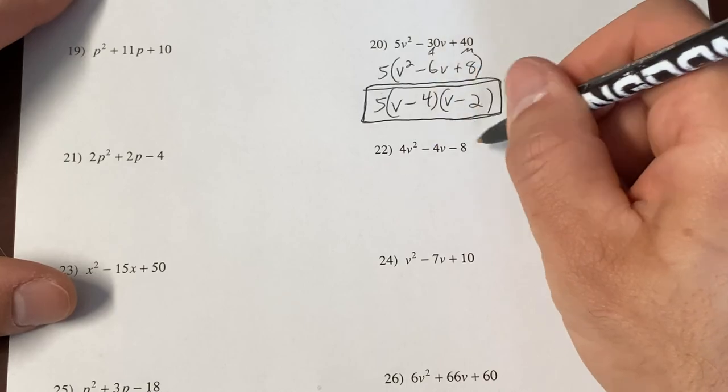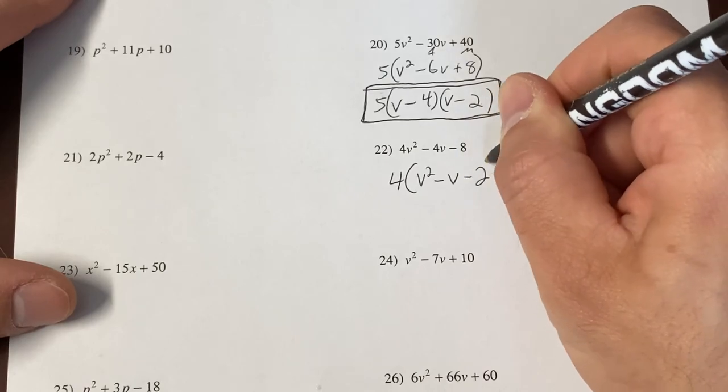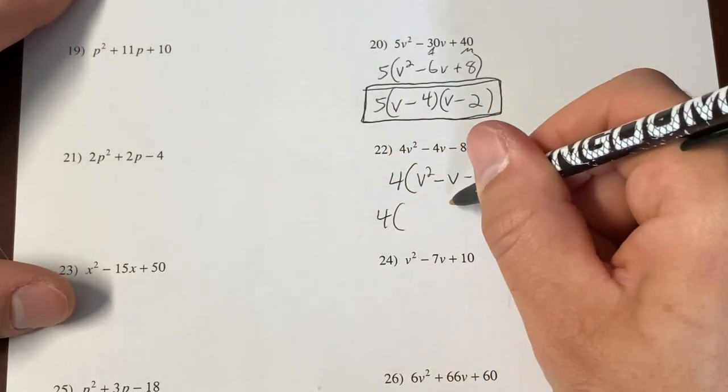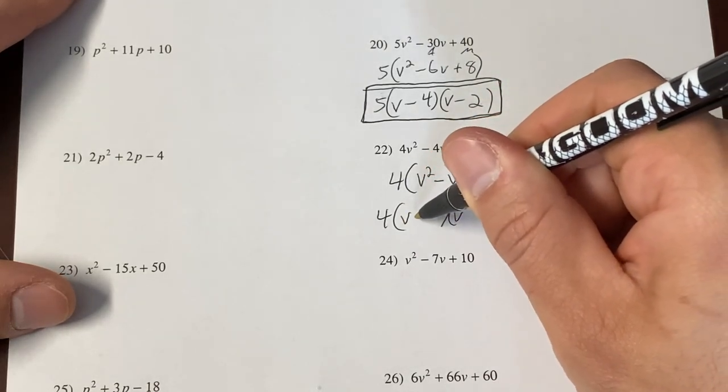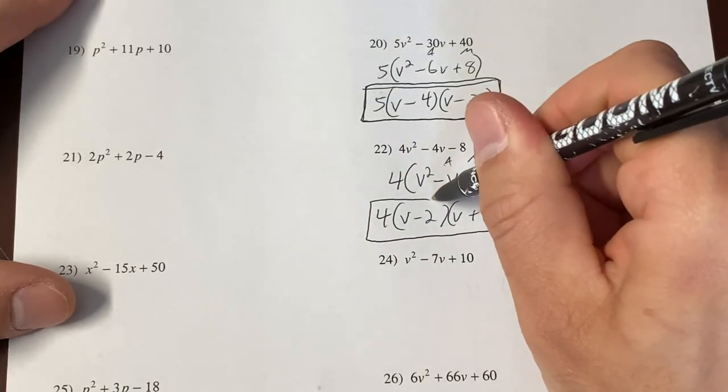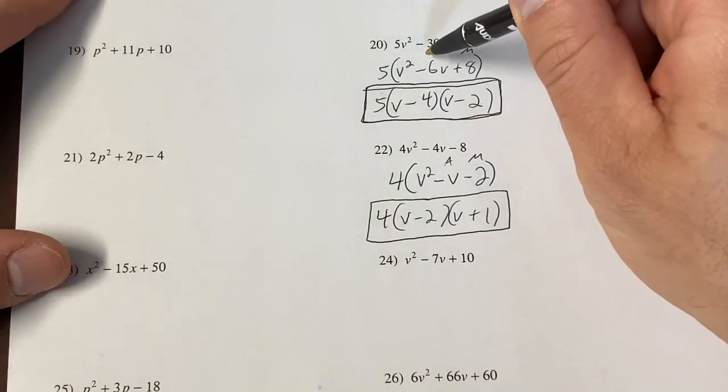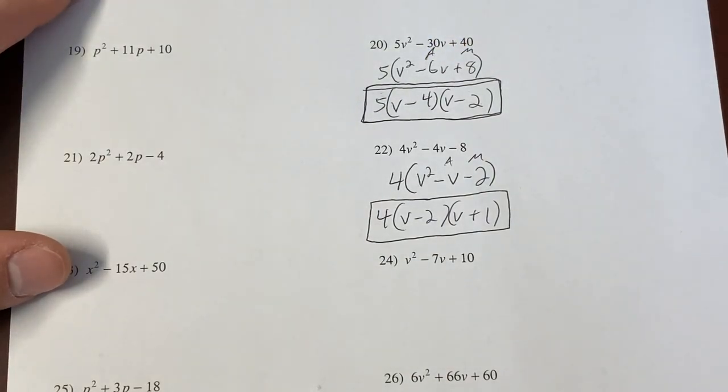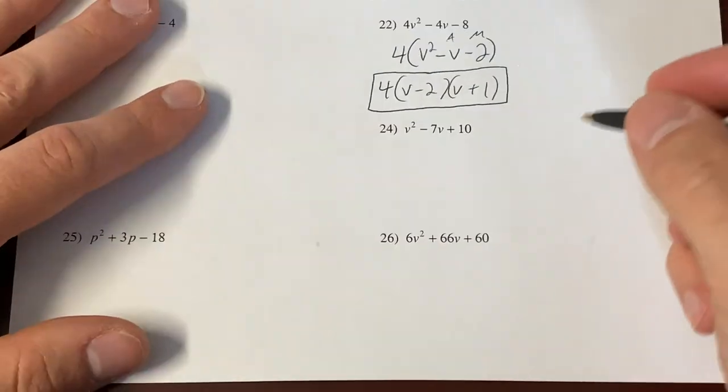Do a few more with you. 4, 4, and 8. This guy can pull out a GCF of 4. v squared minus v minus 2. Don't forget the 4. Add to negative 1. Multiply to negative 2. Well, that's going to be easy. That's negative 2 plus 1. And that will do it. You will get super fast at these the more you do them. Initially, you may be saying to yourselves, I don't get it. This is hard. But if you just keep going through the process, writing your A and your M, asking yourself the questions you need to ask yourself to get this done, eventually you'll get the knack for it.